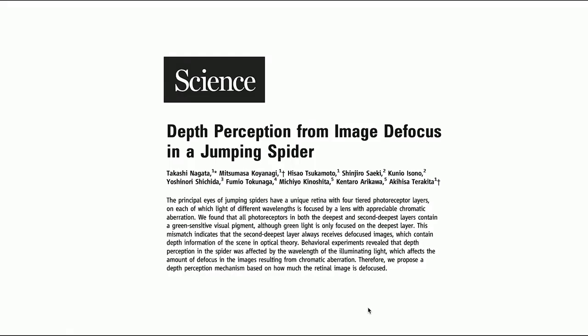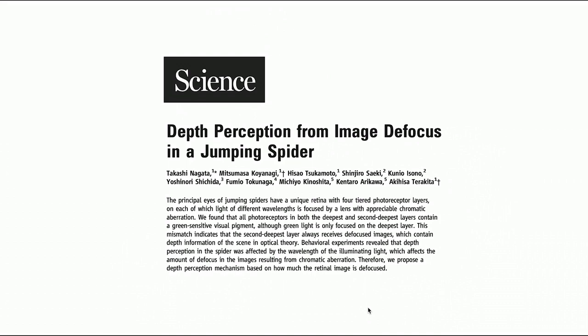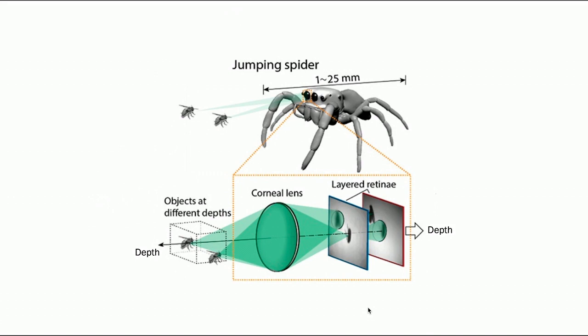You probably already know that scientists have discovered jumping spiders can use image defocus as a cue to perceive depth. Specifically, in its principal eye, it has layered semi-transparent retina. When the jumping spider sees something, it receives several images simultaneously. These images are of different defocus, and the defocus cue is used to extract depth.